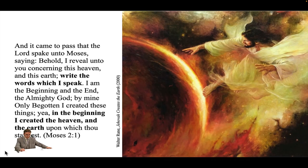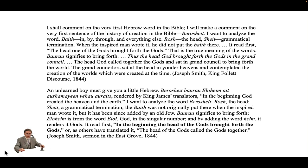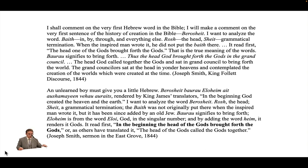We can begin with revelations pertaining to the first chapter of Genesis. According to Moses 2:1, the written revelation presupposes something like Genesis 1:1 — 'In the beginning, God created the heaven and the earth.' Joseph Smith commented on Genesis 1:1 in two sermons in Nauvoo in 1844: the King Follett sermon and a second sermon given in the East Grove. Kevin Barney has done an in-depth study of the manuscript sources, and I'll make a few additional comments.